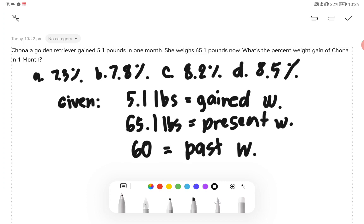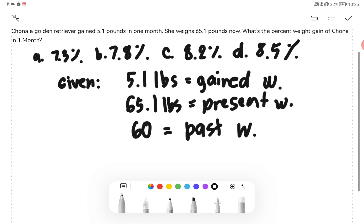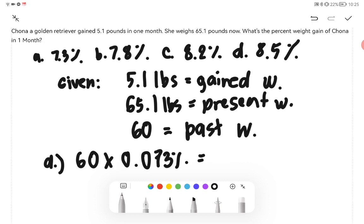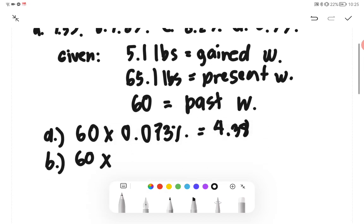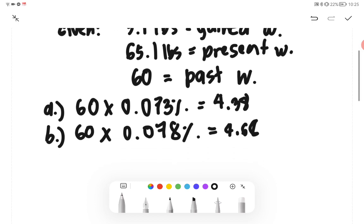We will simply multiply 60 with the choices. Example A: let's try A first. 60 multiplied by 0.073 equals 4.38. Letter B: 60 multiplied by 0.078 equals 4.68. Letter C: 60 multiplied by 0.082 equals 4.92.